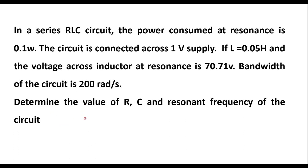In this video, I will consider one numerical on series RLC circuit. In a series RLC circuit, the power consumed at resonance is 0.1 W. The circuit is connected across 1 volt supply. L is equal to 0.05 Henry and the voltage across inductor at resonance is 70.71 volts. Bandwidth of the circuit is 200 radians per second. Determine the value of R, C and resonant frequency of the circuit.